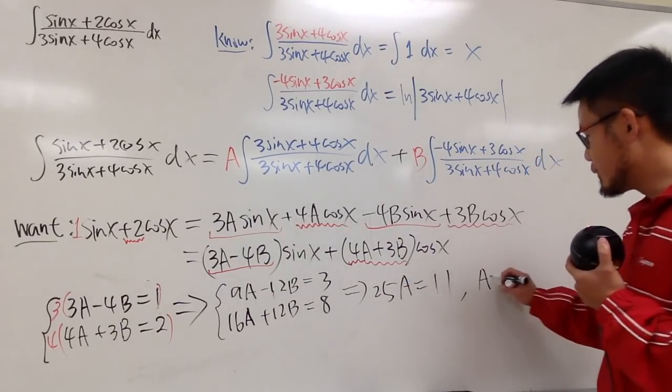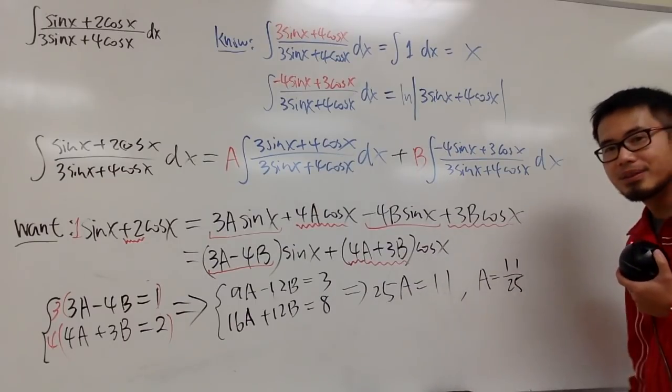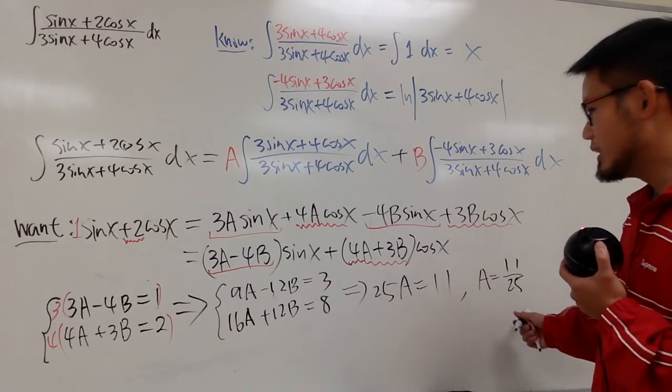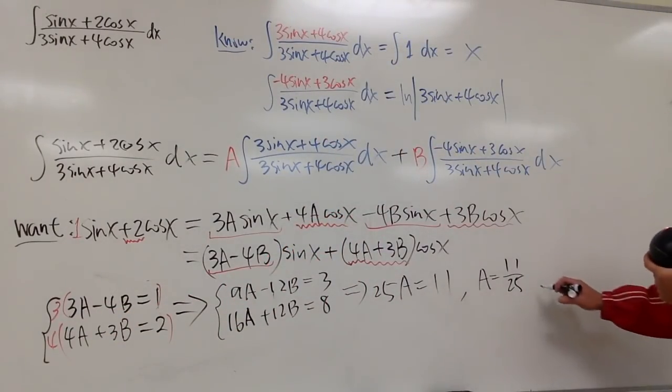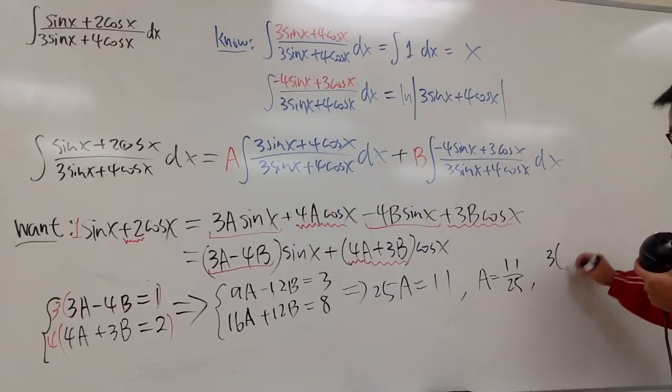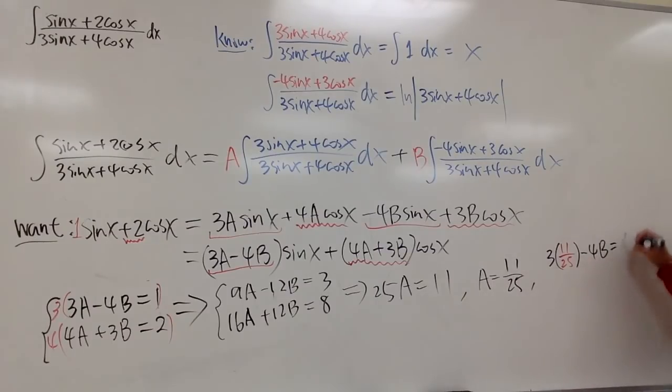You get 25a equals to 11. So of course, a is equal to 11 over 25, right? And if a is equal to 11 over 25, oh my God, you have to do more fractions. Plug it into the first equation, maybe. So you will get, let me just write this down. 3 times 11 over 25 minus 4b is equal to 1. This is 33 over 25 minus 4b is equal to 1, which is the same as saying 25 over 25. And this is negative 4b equal to minus this on both sides. So you get negative 8, right? Negative 8 over 25.